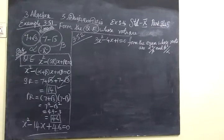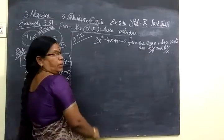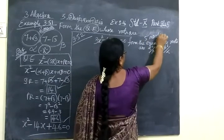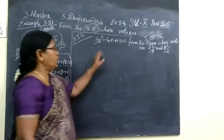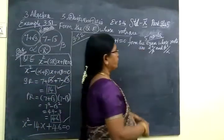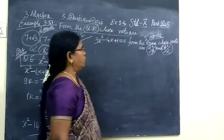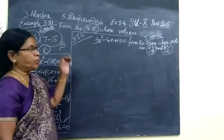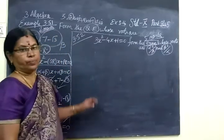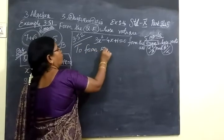Now for the next problem: 3x squared minus 4x plus 1 equals 0. This will come under a 5-mark question. Form the equation whose roots are alpha squared over beta and beta squared over alpha.